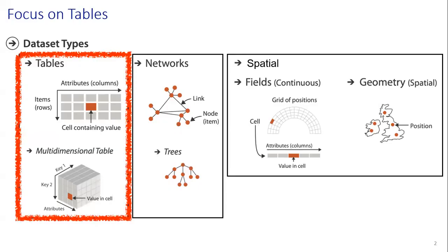Here, for this focus on tables, as we discussed the last few weeks, we have dataset types. There we had tables, networks, and spatial data as well. For the tables, we have multi-dimensional tables and also 2D tables. For 2D tables, we have only two dimensions, and for multi-dimensional tables, we have three or more dimensions.